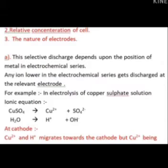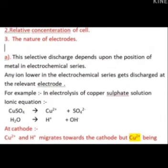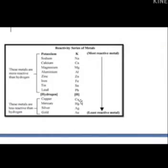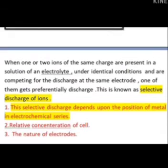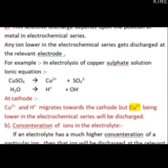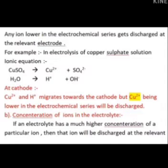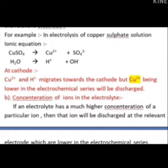Selective discharge depends on position in the electrochemical series. For example, during electrolysis of aqueous copper sulfate solution, electricity breaks CuSO₄ into copper ions and sulfate ions, and water breaks down into H⁺ and OH⁻. Both Cu²⁺ and H⁺ migrate to the cathode, but since copper is positioned below hydrogen in the electrochemical series, copper ions discharge more easily at the cathode.